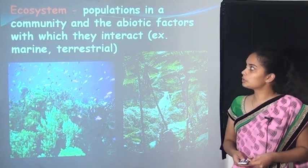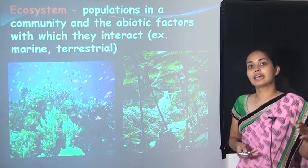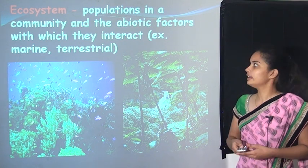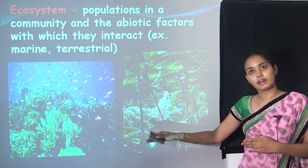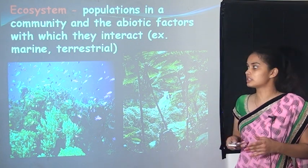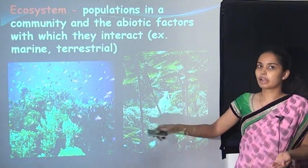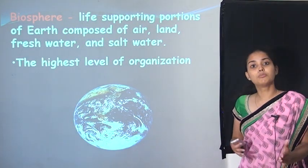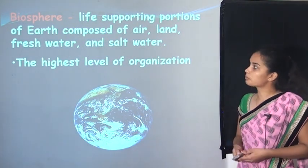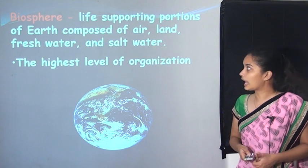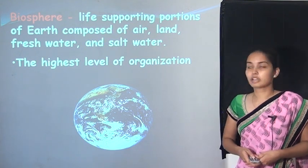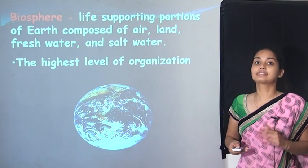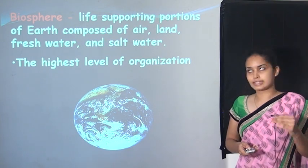What is an ecosystem? The populations in a community and the abiotic factors — temperature, light, etc. — with which they interact form an ecosystem. For example, marine ecosystem and terrestrial ecosystem — terrestrial means on land, marine means on water. The biosphere is the life-supporting portion of the earth composed of air, land, fresh water, and salt water. It is the highest level of organization.